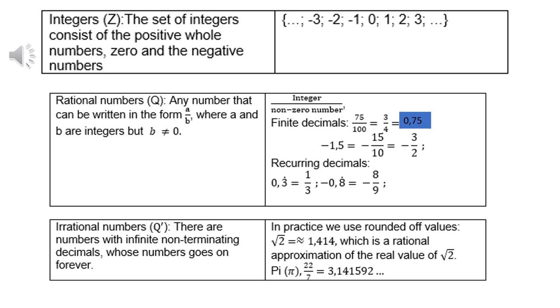Rational numbers—we use symbol Q. Any number that can be written in the form a/b, where a and b are integers, but b is not allowed to be zero. So it's an integer divided by a non-zero number, and they are finite. Like 75/100 is 3/4, which is 0.75.